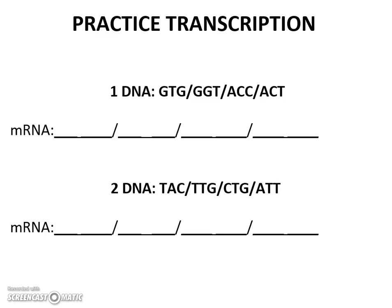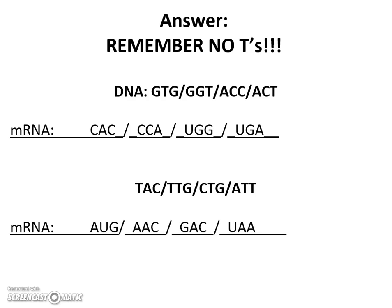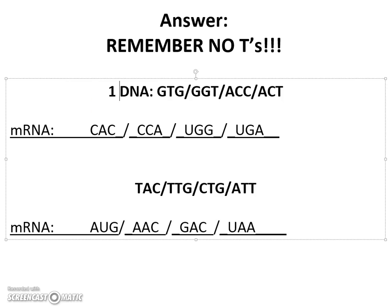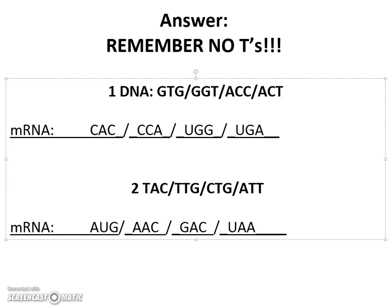Now that you've written down your answers, let's check and see if your work is right. Remember there should be no T's if you did this correctly. Your first DNA sequence GTG should end up with an RNA sequence that looks like this: CAC, CCA, UGG, and then UGA. The second RNA sequence should have followed: AUG, AAC, GAC, and UAA. If you did not understand how to do this or had difficulties, raise your hand and ask your teacher.